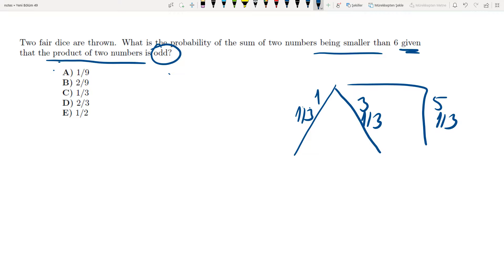And the second one, suppose I have a one on the first one. The second one can only be one or three. It cannot be five. Why? Because one plus five is six, which is not smaller than six.